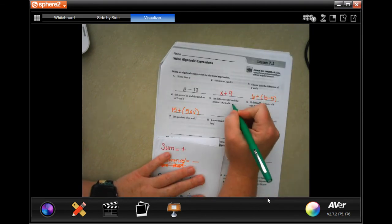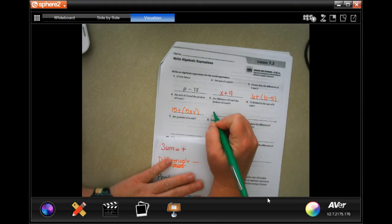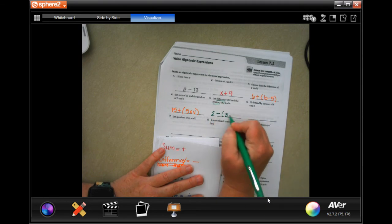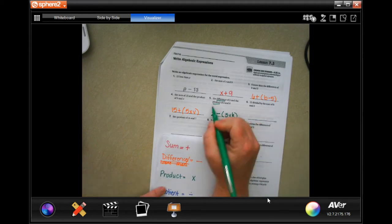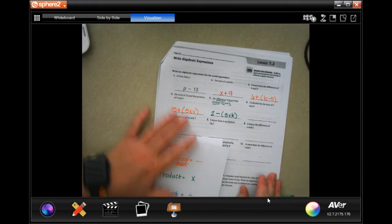The difference of two and the product of three and K. So difference of two and the product of three and K. Product multiply three and K difference of two.